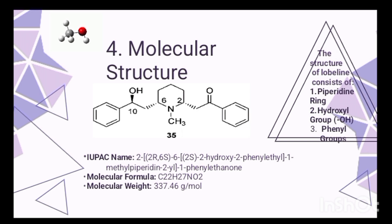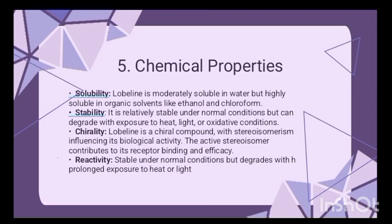Moving on to the molecular structure of Lobeline — the drug has a structure consisting of a piperidine ring in the center with two phenyl groups on the terminals, along with hydroxyl and methyl groups. The IUPAC name, molecular formula, and molecular weight are also provided for reference.